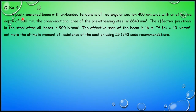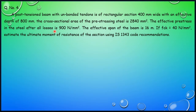In this session we will see numerical problems on post-tensioned unbonded tendons. A post-tensioned beam with unbonded tendons is a rectangular section 400 mm wide with an effective depth of 800 mm. The cross-sectional area of the pre-stressing steel is 2840 mm². The effective pre-stress in the steel after all losses is 900 N/mm². The effective span of the beam is 16 meters, and FCK is equal to 40 N/mm².